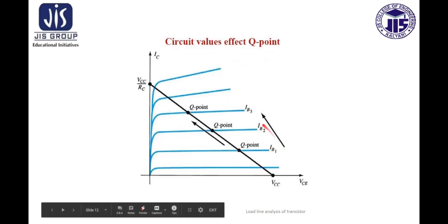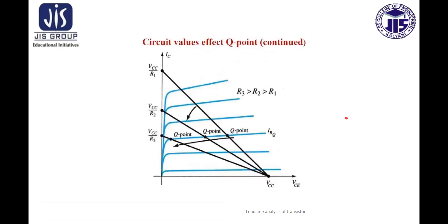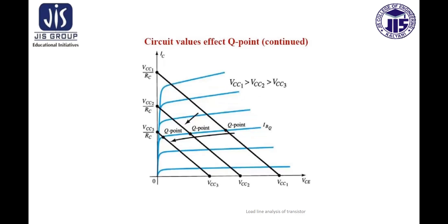As the value of IB increases, the Q point also increases. When IC saturation decreases, the Q point also decreases and moves towards the cutoff section, staying on the same IB line. Similarly, when VCC decreases, the Q point also moves towards the cutoff section.